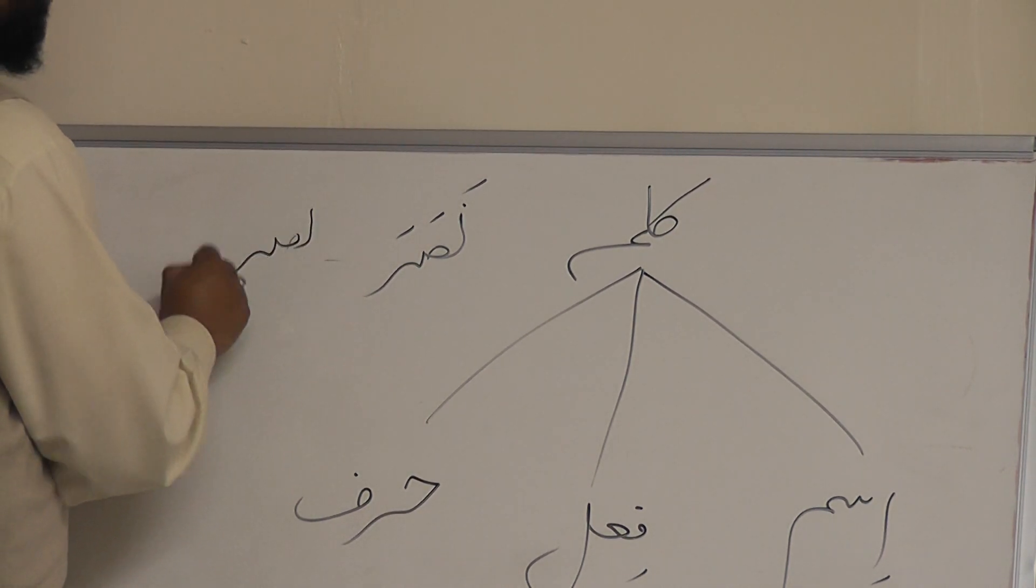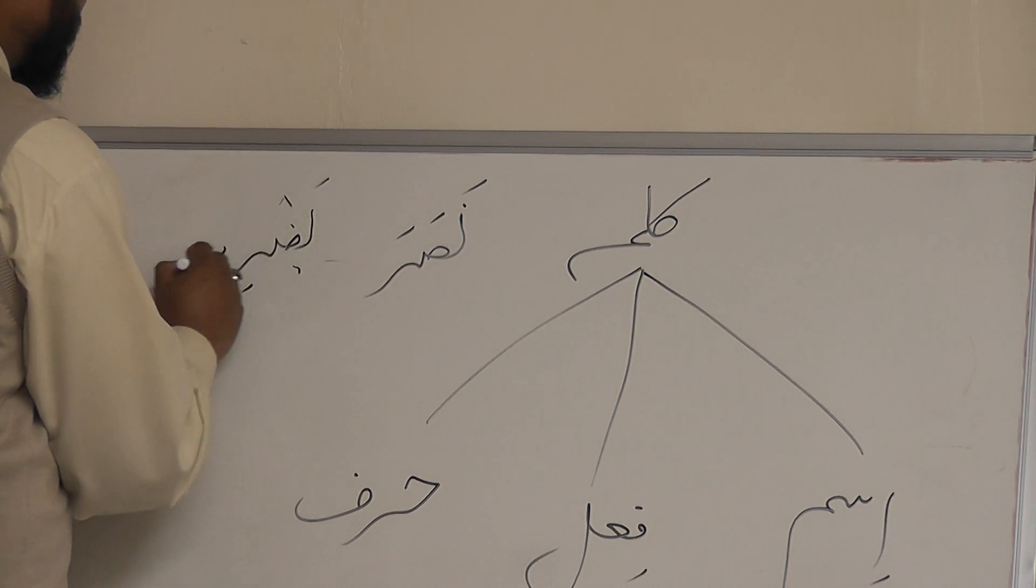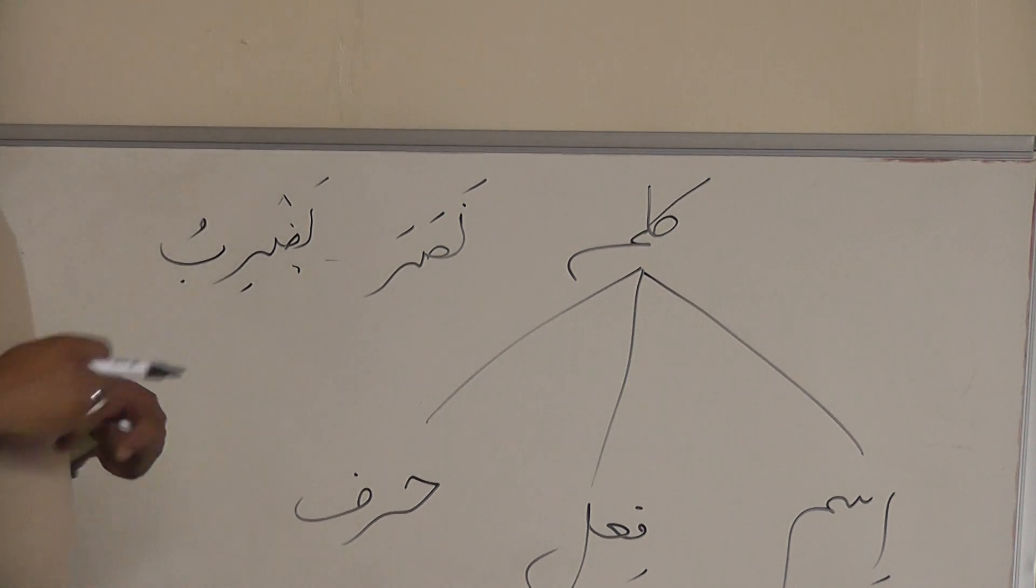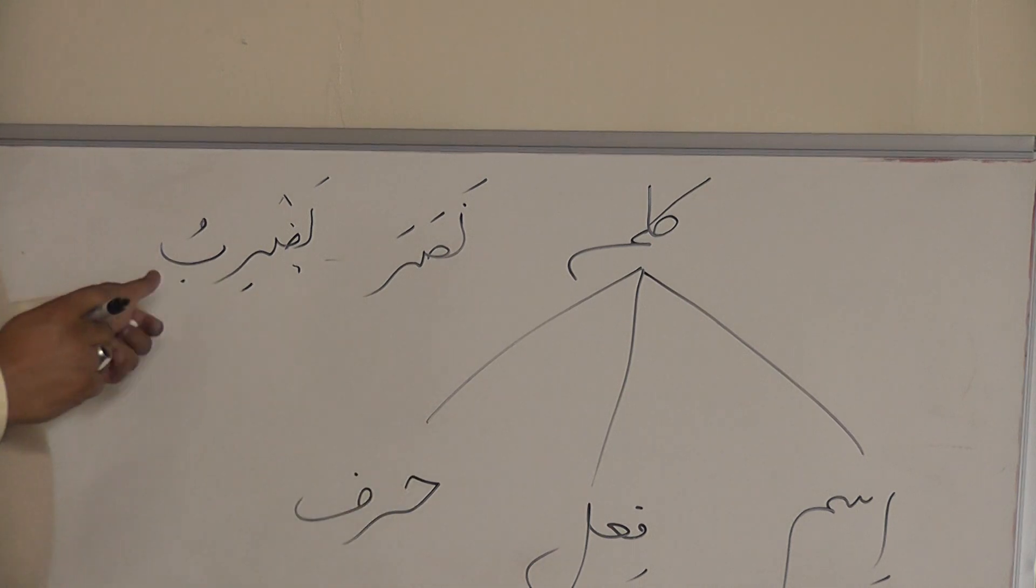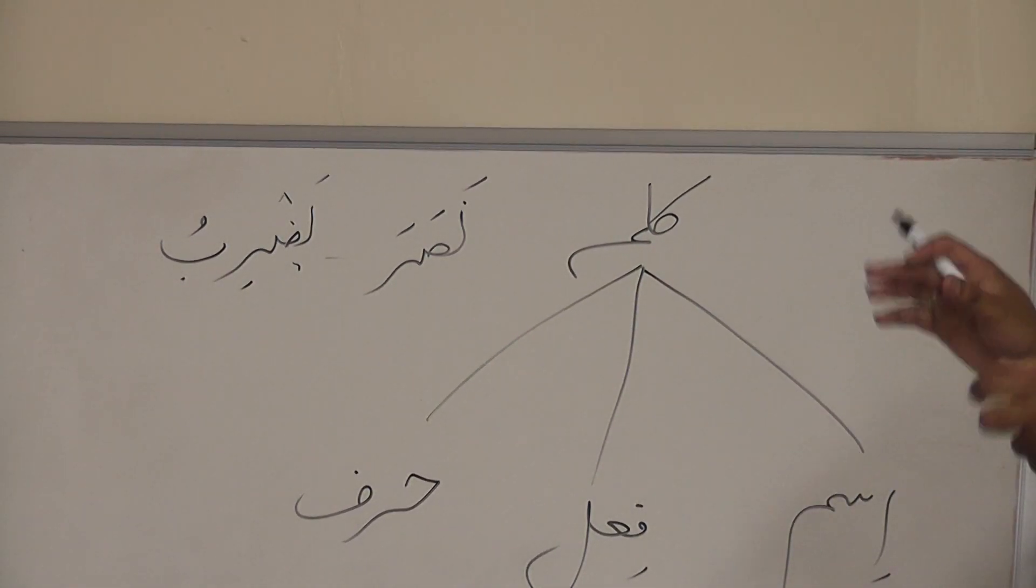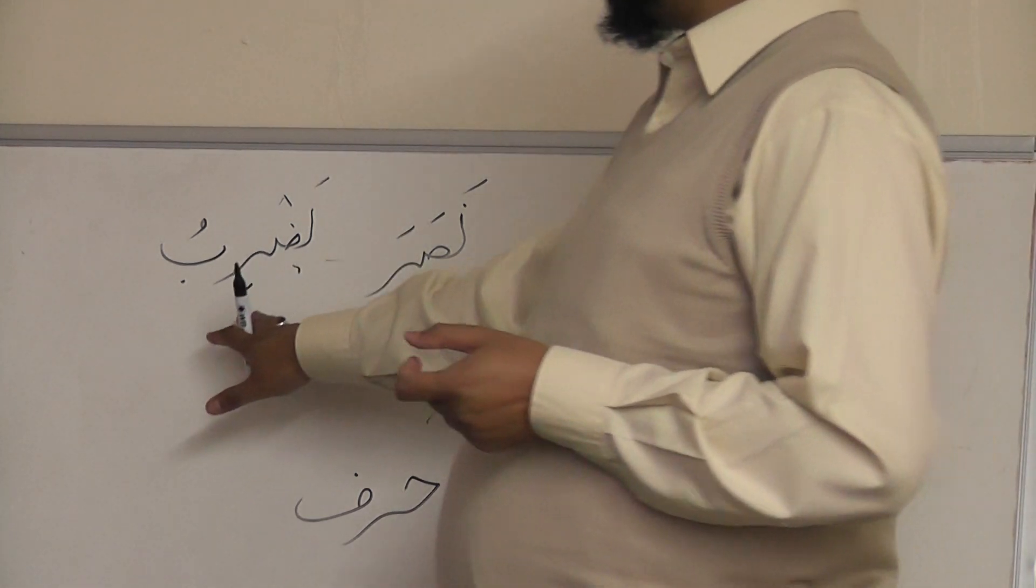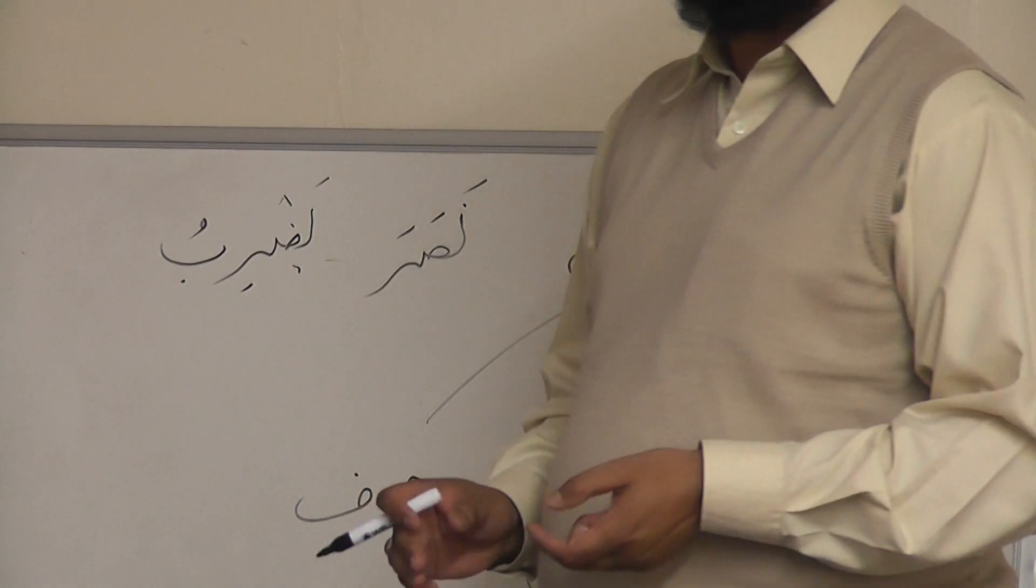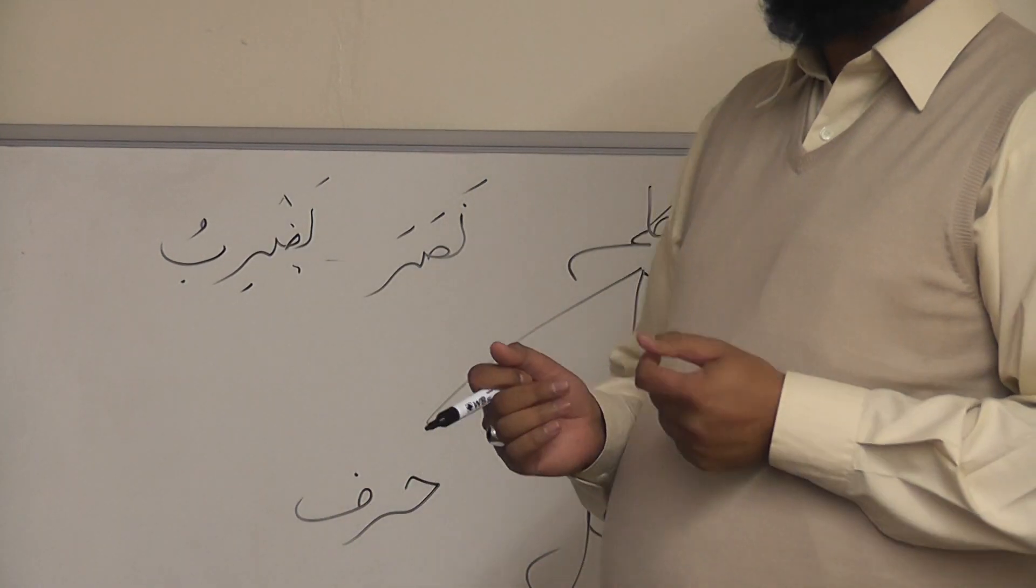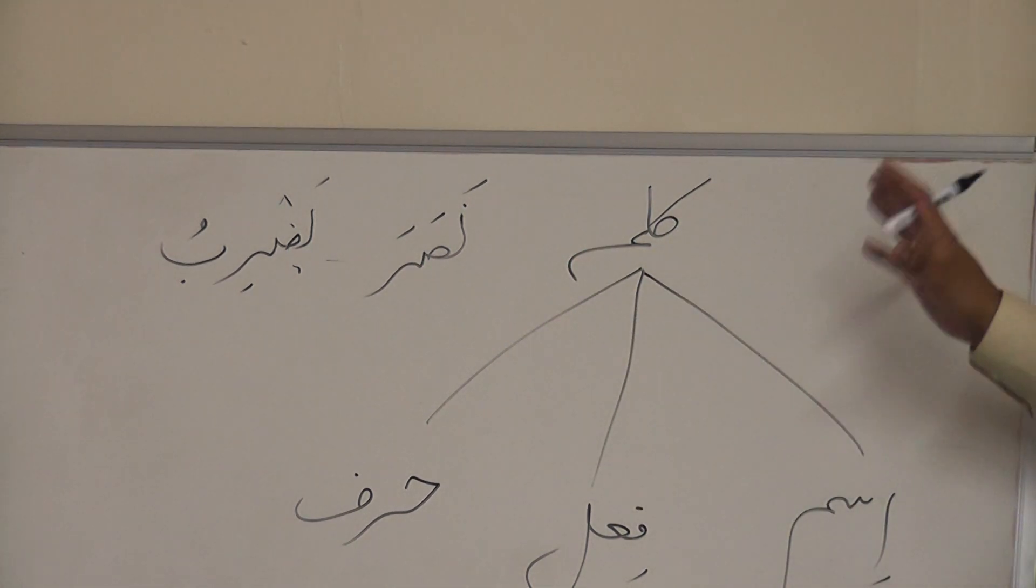YADURIBU means he hits, or he will hit. This verb has two tenses at the same time—present tense and future tense. So YADURIBU means he hits at the present, or he will hit in the future. That's called FAIL or verb.